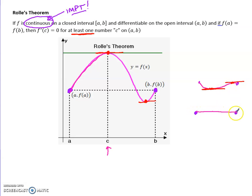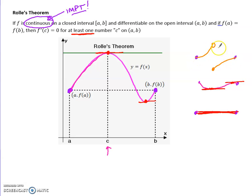What if you just went straight across? Well, if you went straight across, this whole time your slope is zero, so there would be infinite places where your slope was zero. The reason continuity is so important is: if it wasn't continuous, I might do something like go partway, stop, start down here and go back up. There might be nowhere along this area where the slope is zero, because I'm not required to go up and come back down. So being continuous is very important.